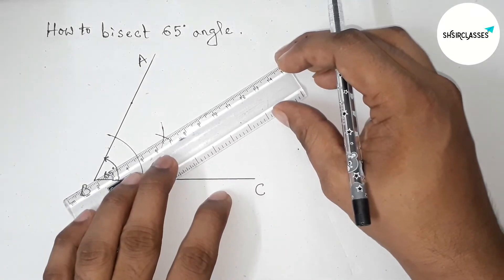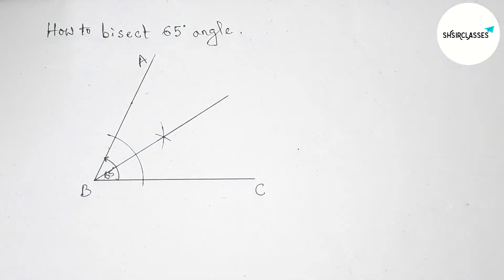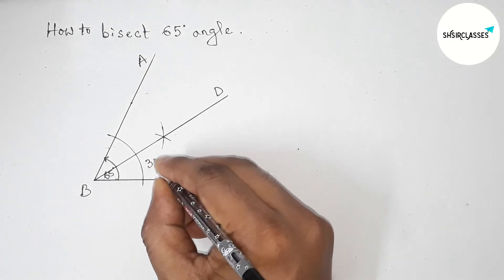Now joining this line, which bisects the 65-degree angle perfectly. Taking point D here on the bisector.